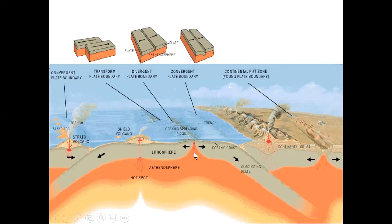We see here a graphic showing the three types of plate boundaries. We're going to be concentrating today on what's going on at mid-ocean ridges, where we see arrows moving in opposite directions. We also see something happening in continental crust where the arrows are moving in opposite directions — so we can have seafloor spreading, but we can also get spreading taking place on land.